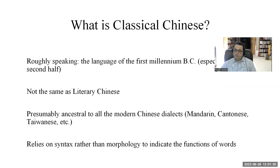In later periods there's very good evidence that the written language and the spoken language were quite different. For those types of texts, we use the term Literary Chinese to refer to a language that was really only ever written. Classical Chinese, we think, was both written and spoken. For that reason, it's presumably ancestral to all the modern Chinese dialects — Mandarin, Cantonese, Taiwanese, you name it. This is very murky, because most of these dialects were not written down until the 19th century, which makes the dialectology a little bit difficult.